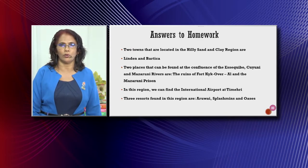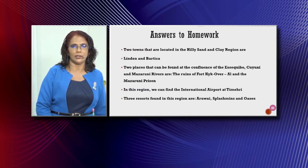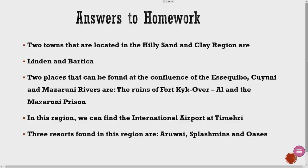Answers to homework. Did you do your homework? Let's check our answers. Two towns located in the hilly sand and clay region are Linden and Bartika. Two places found at the confluence of the Essequibo, Cuyuni and Mazaruni rivers are the ruins of Fort Kaikoverall and the Mazaruni prison. In this region we can find the international airport at Timiri. Three resorts found in this region are ROI, Splash Mints and Oasis. Remember, in our previous lessons we named more than those three.